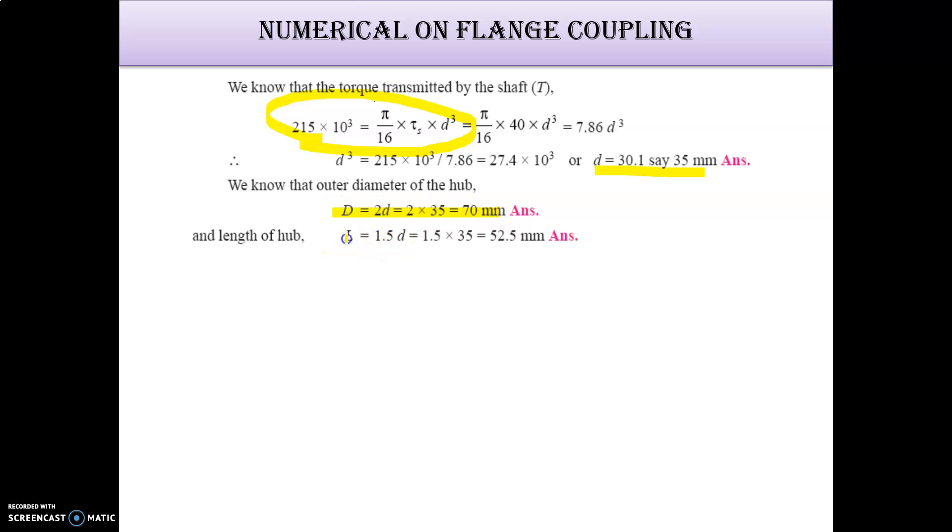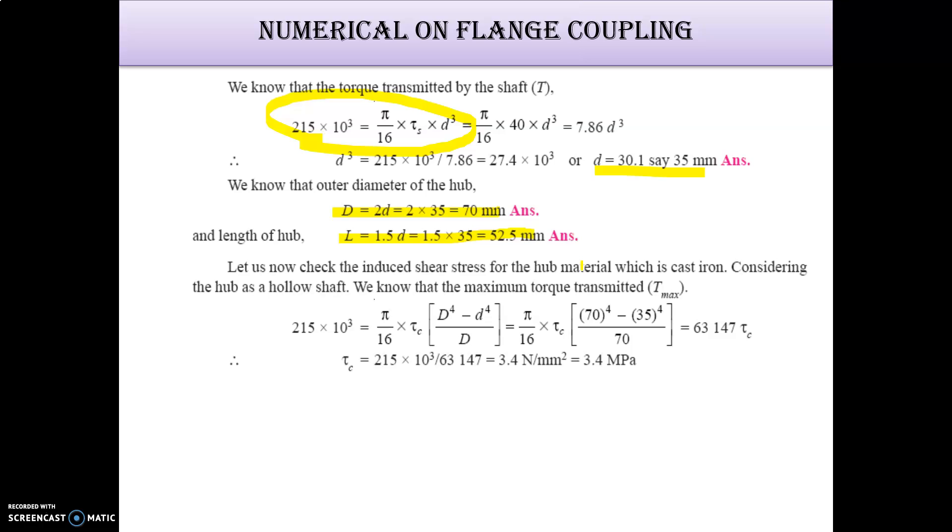We can check the hub, so T equals pi by 16 tau C D to the 4th minus small d to the 4th by D. Put the values and check 3.4, which is less than a given value. So here the design is safe, we can proceed now.